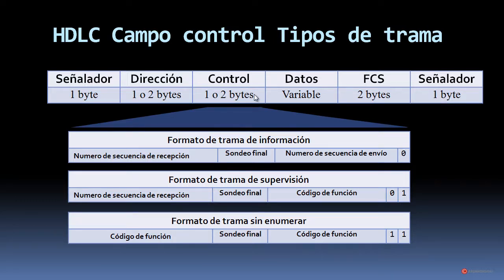Respecto a las diferencias del campo de control, tenemos tres contenidos posibles: en el formato de trama de información, número de secuencia de recepción, sondeo final y número de secuencia de envío; en el formato de trama de supervisión, el código de función correspondiente; y en el formato de trama sin enumerar, el código de función, sondeo final y código de función.